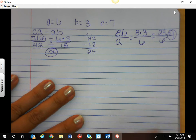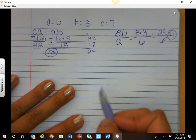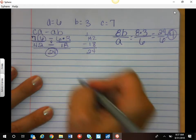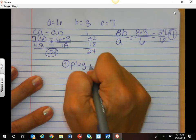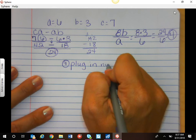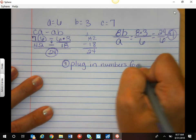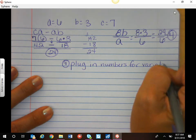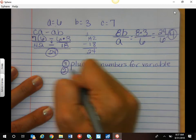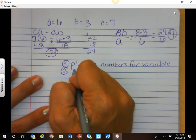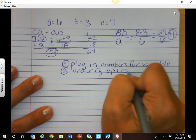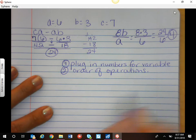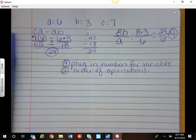So keep in mind, when you're doing evaluating expressions, you need to always plug in your numbers for the variable. And then, always, always, always use your order of operations. So I want you to try this on the Tony paper. Let me know if you have any questions.